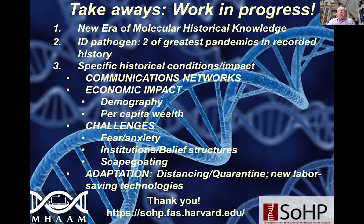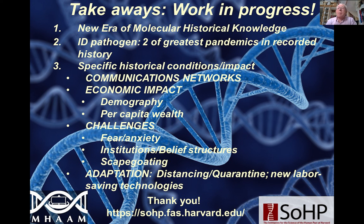So what are the takeaways? It's a work in progress, but we have entered a new era of molecular historical knowledge. We have been able — present-day scholars and scientists — to definitively and robustly identify the pathogen of two of the greatest pandemics in recorded history. We're beginning to see the specific historical conditions of their impact: the existence of robust and intense communication networks — the shipping of the Roman Empire or medieval trade that moved the rats which are the carriers of bubonic plague around the world, and the airliners that move the humans who are the carriers of COVID-19 around the world. The economic impact is still being assessed in terms of demography, already clear for the Black Death, and under debate for the Justinianic pandemic.